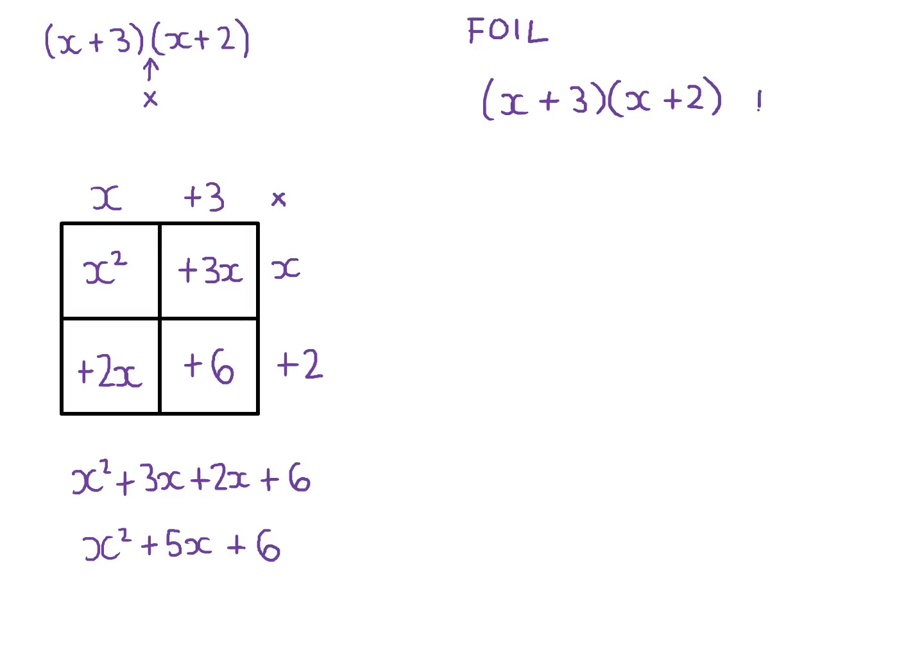So x times x gives us x squared. The outside terms. So x times positive 2 gives us positive 2x. The inside terms. Positive 3 times x gives us positive 3x. And then the two last terms. Positive 3 times positive 2 gives us positive 6.